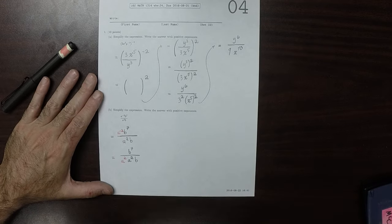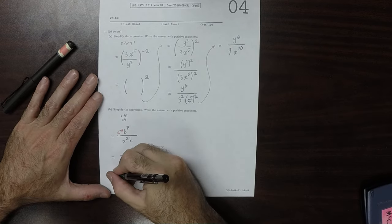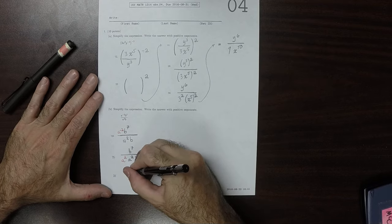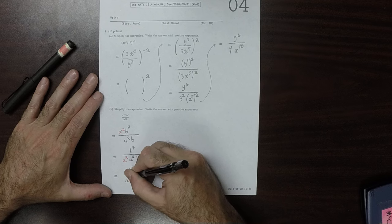So, now all the exponents are positive. Now we can start combining. So, this would be b to 7, over a to 4, b.